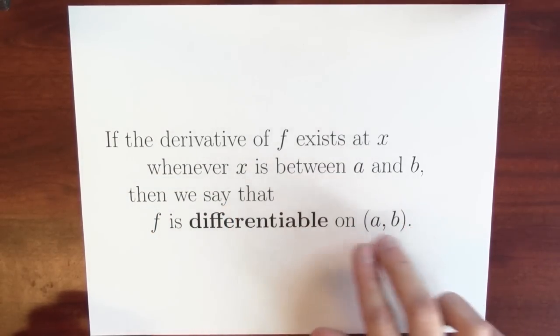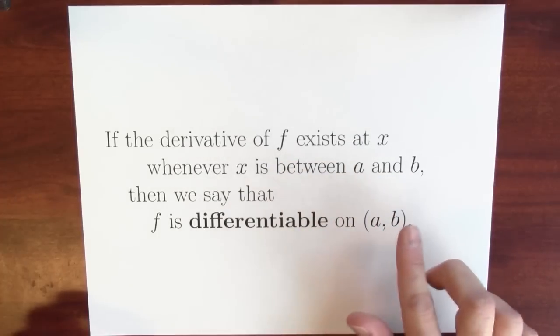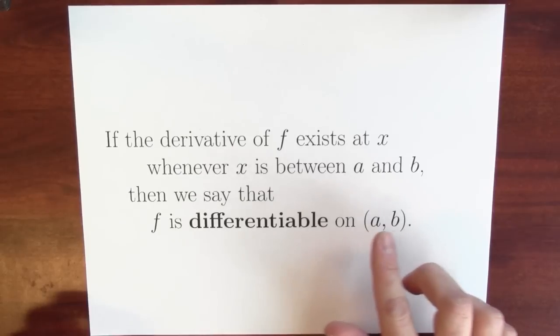So as a little bit of a warning here, this is not a point. This is an interval. It's all the numbers between a and b, not including a, not including b.